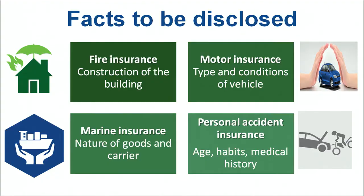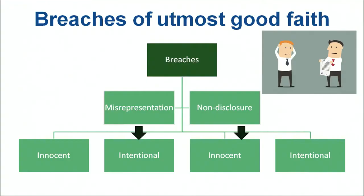For personal accident insurance, the aspects which need to be disclosed are the age of the person, habits, lifestyle, occupation, habits related to consumption of alcohol or intoxication, and medical history — whether the person has a congenital problem like BP, diabetes, and so on. Let us now understand what could be the various breaches of utmost good faith. Breaches essentially mean how the utmost good faith principle can be broken.